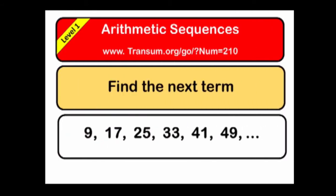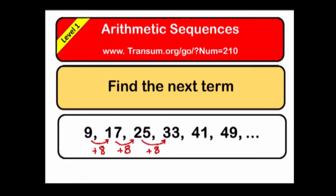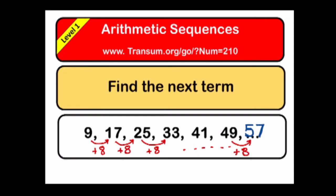This example starts off with nine and then goes on to seventeen. To find the common difference, you could subtract nine from seventeen, and that would give you eight. You can quite clearly see that it is eight that is added on each time to get the next term in the sequence. So if you add eight on to forty-nine, you will get the answer fifty-seven.